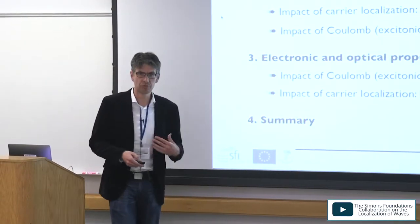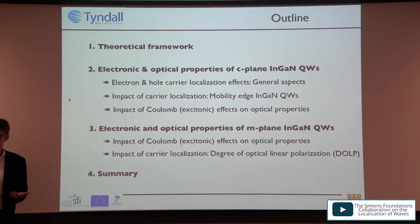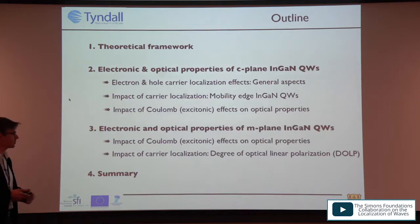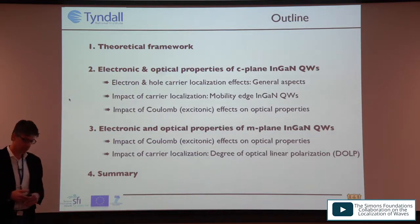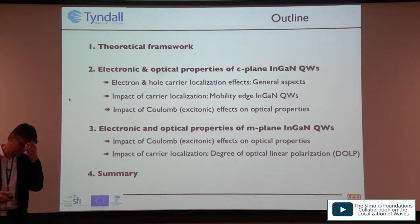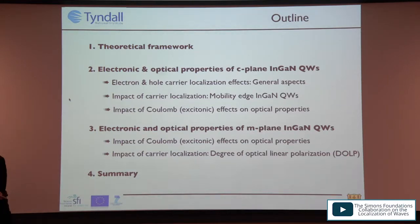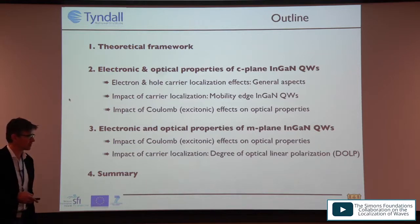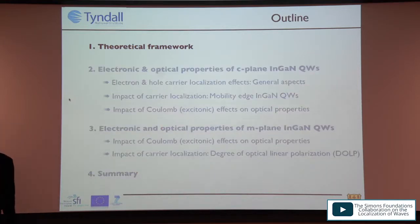The outline of my talk: I will briefly discuss the theoretical framework, then talk about electronic and optical properties of C-plane systems, discuss general aspects, and cover recent work done together with experimentalists from Cambridge and Manchester on the mobility edge. I will then discuss excitonic effects in disordered quantum well systems, and if time permits, look at M-plane systems as well — excitonic effects and how carrier localization affects the degree of optical linear polarization.